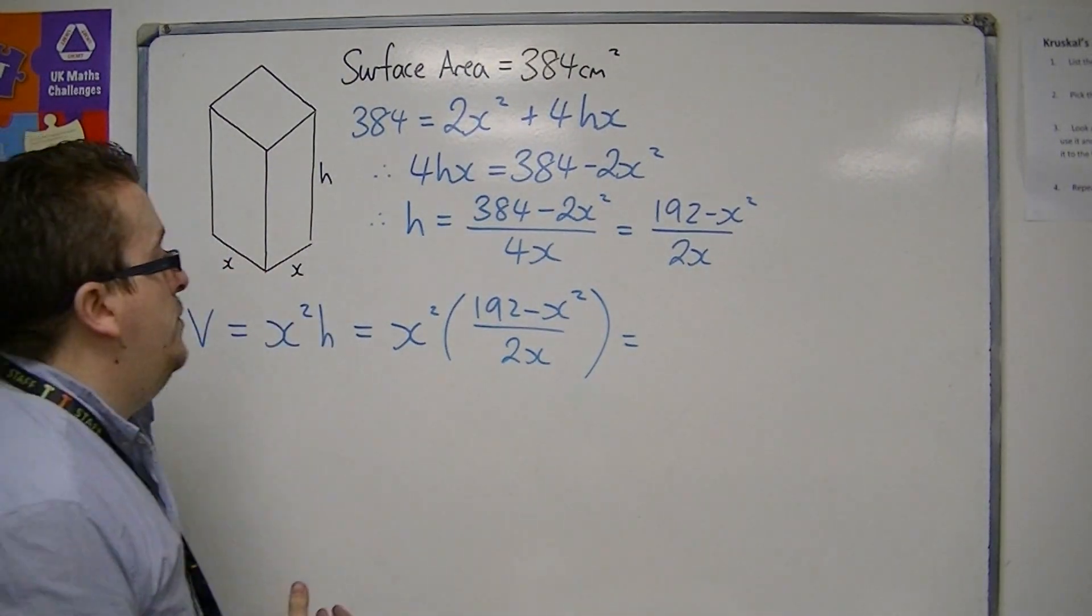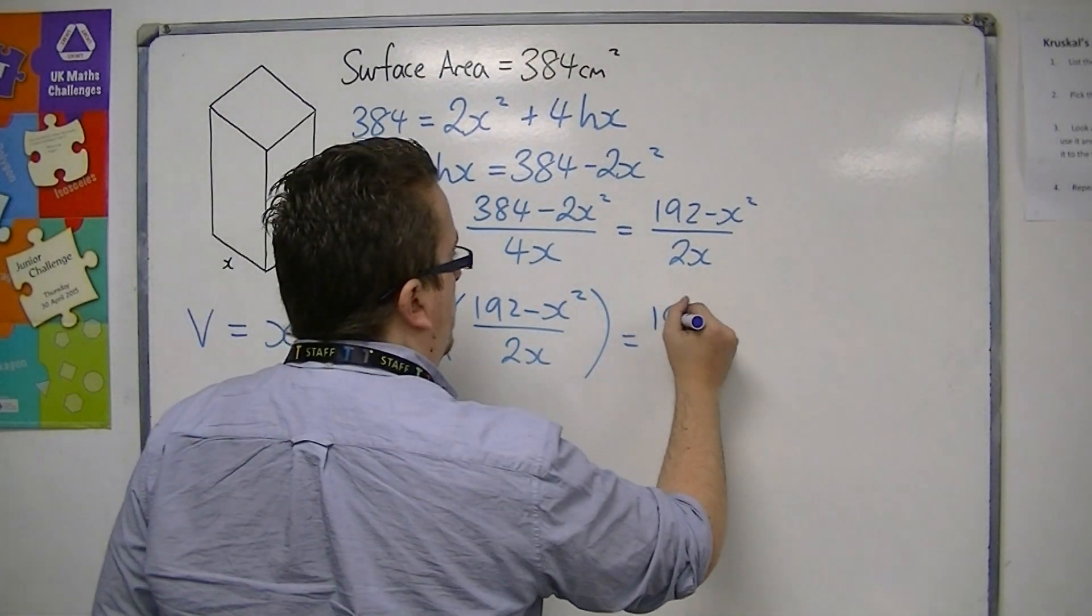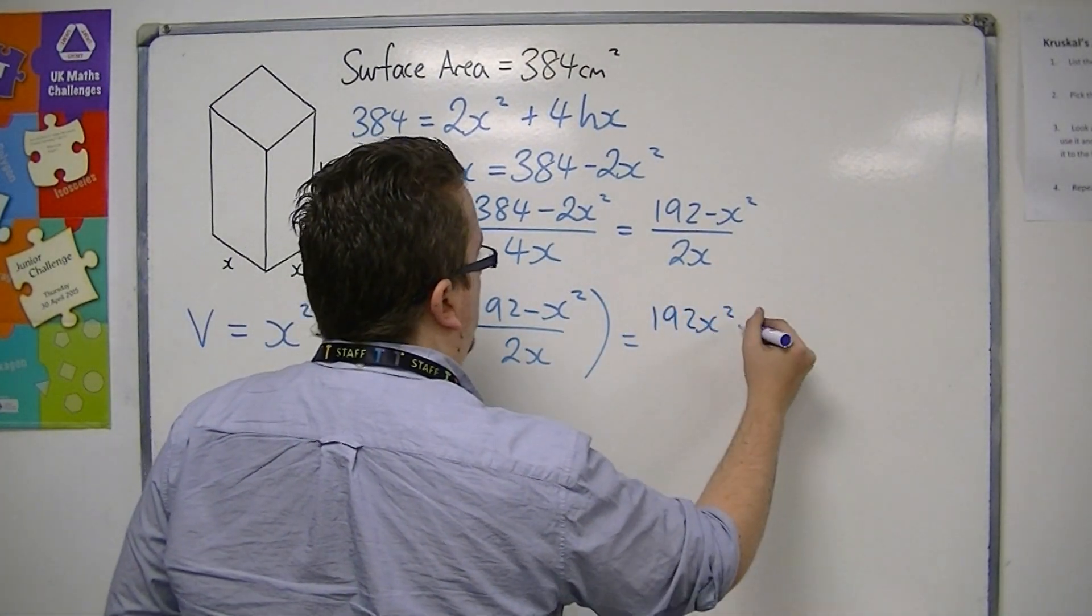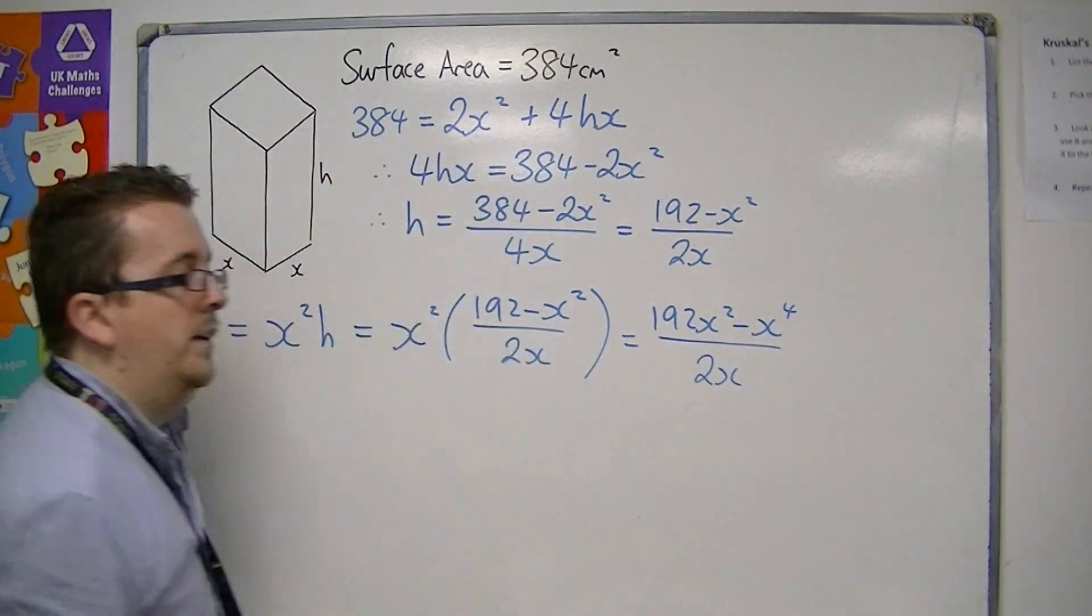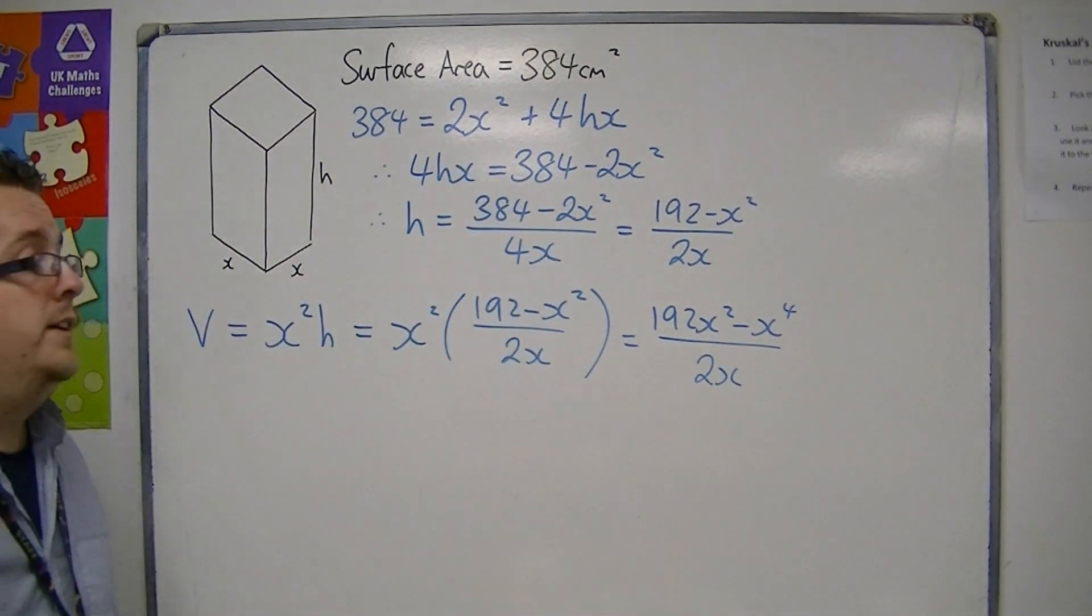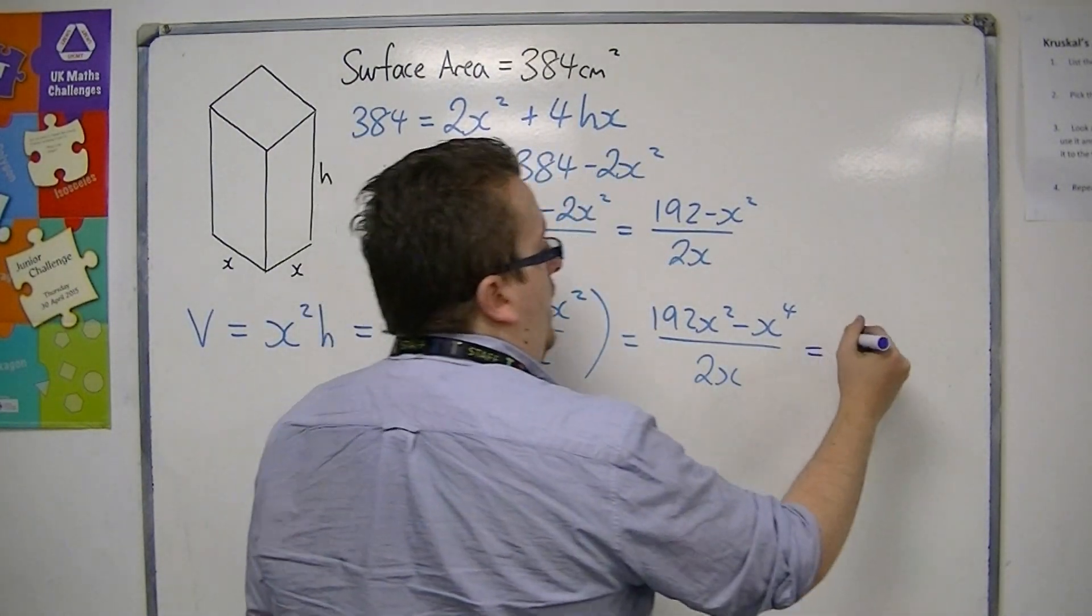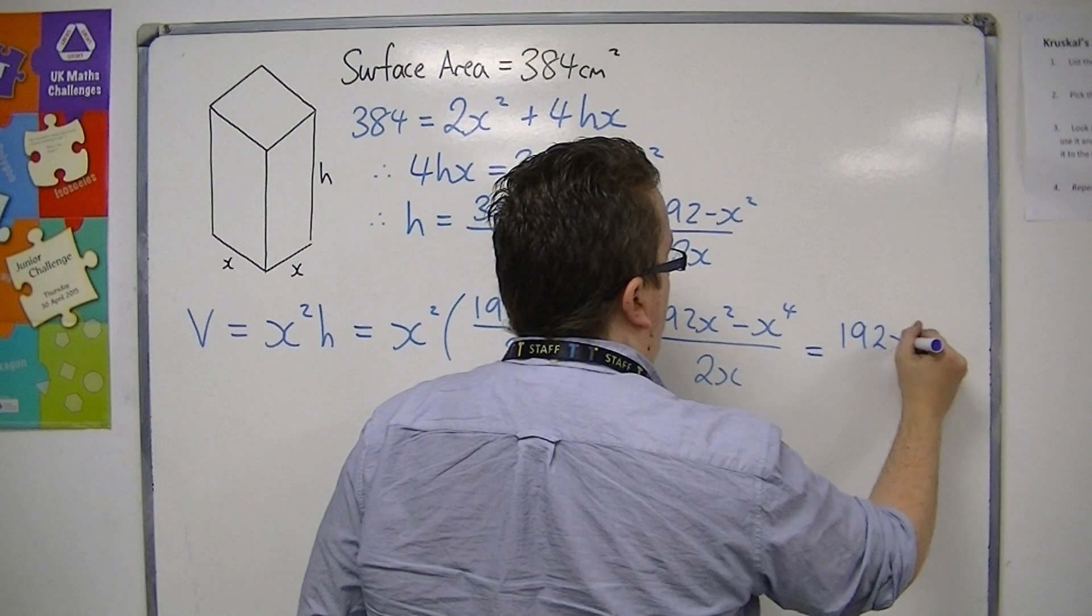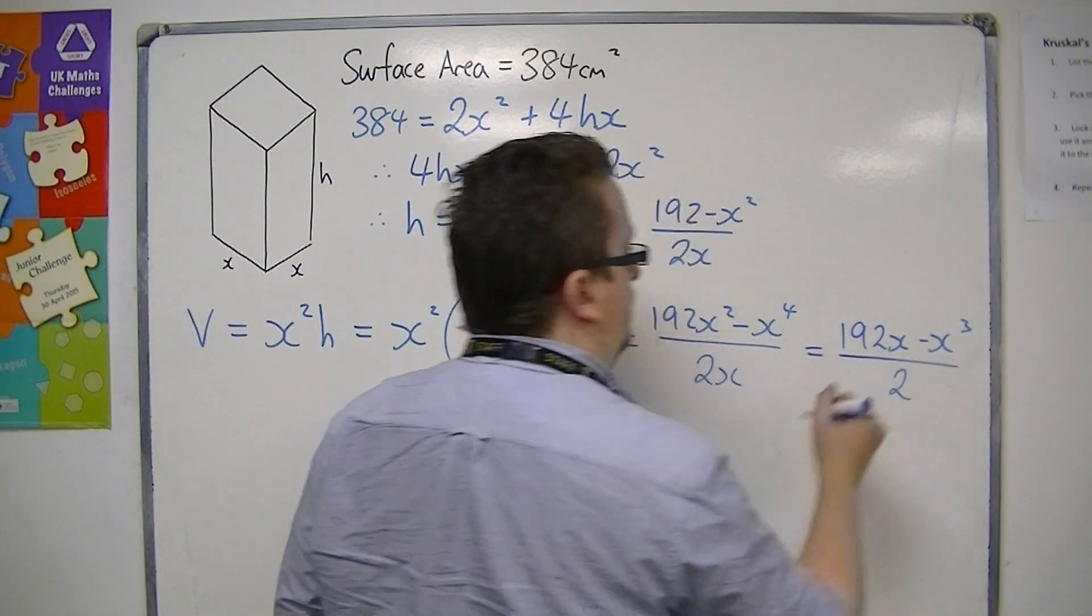And if I multiply that through, I've got 192x squared, take away x to the 4, all over 2x. But that can be simplified further because I can divide top and bottom by x. So I get 192x take away x cubed all over 2.